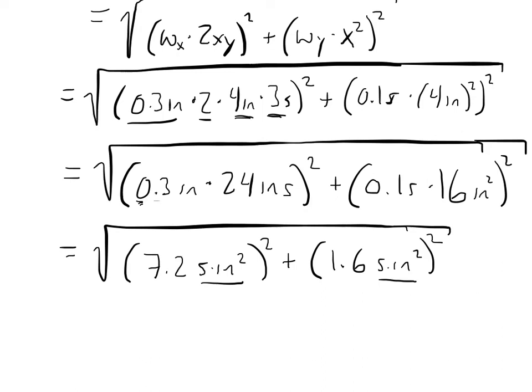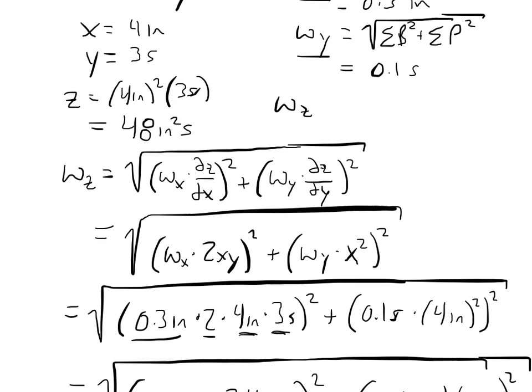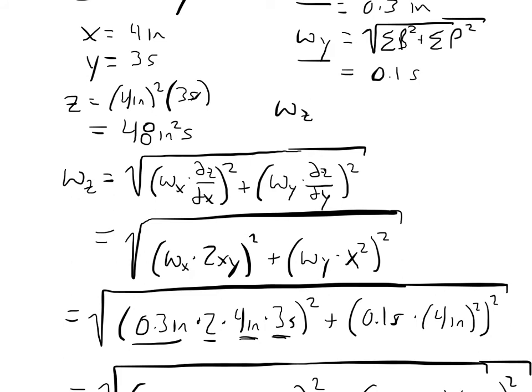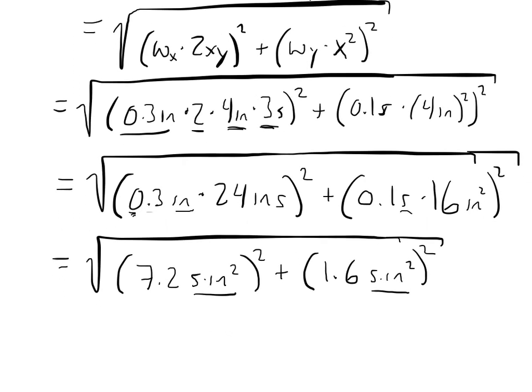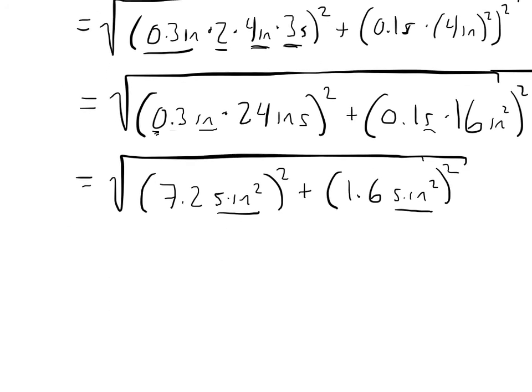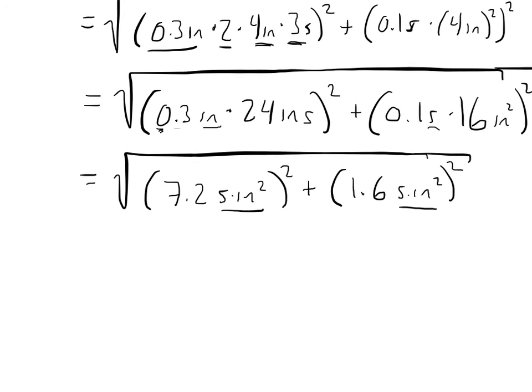And you notice how original uncertainties in x was in inches, and the uncertainty in y was seconds. And what these partial derivatives do is they take care of the unit conversions. So, if we go back up and look, z is in units of inches squared seconds, or second times inches squared. And so, these partial derivatives helped us to take care of the unit conversions. So, if you're doing uncertainty analysis and your units aren't coming out, it's probably because you're not doing your partial derivatives correctly.